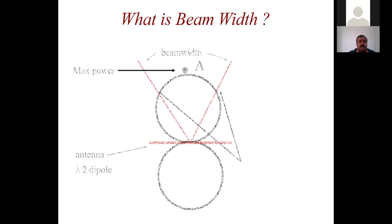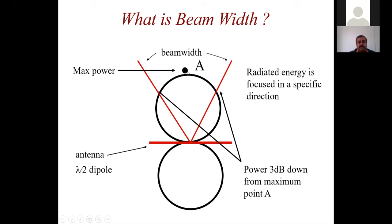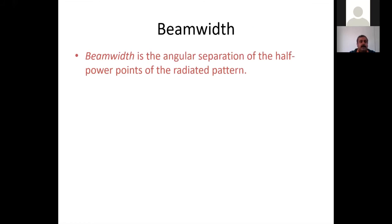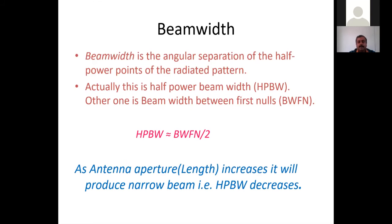Beam width is the angular separation of half-power points of the radiated beam—called the 3 dB beam width or half-power beam width (HPBW). Another measure is the beam width between first nulls. When the antenna dimension increases, the beam becomes narrower. This is shown in the 3D pattern of a simple dipole antenna.